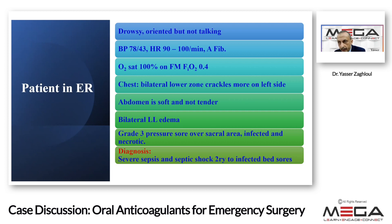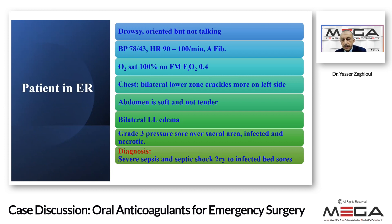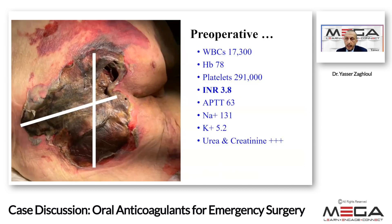Oxygen saturation was 100% on a face mask with 40% oxygen. Chest exam revealed bilateral lower zone crackles, more on the left side. The abdomen was soft and non-tender. There was bilateral lower limb edema, and critically, a grade 3 pressure sore over the sacral area that was infected and necrotic — this was identified as the source of septic shock.